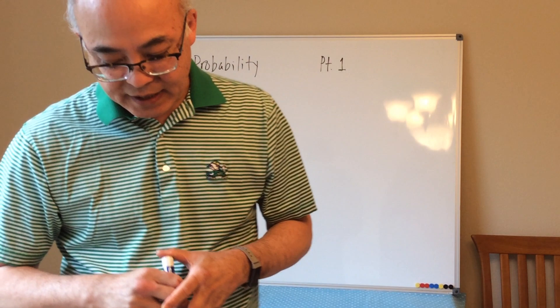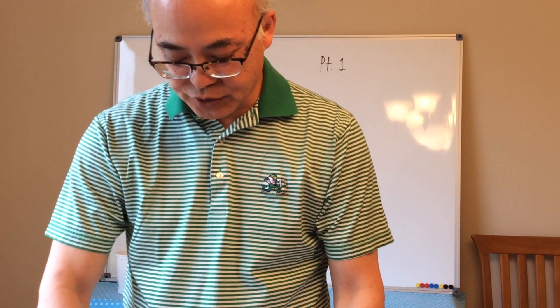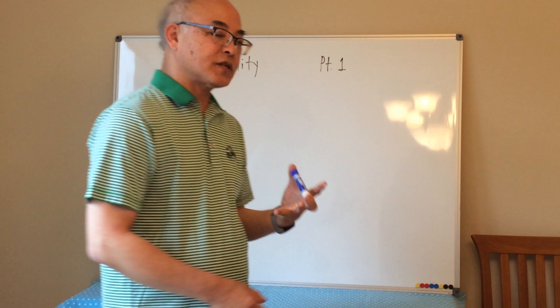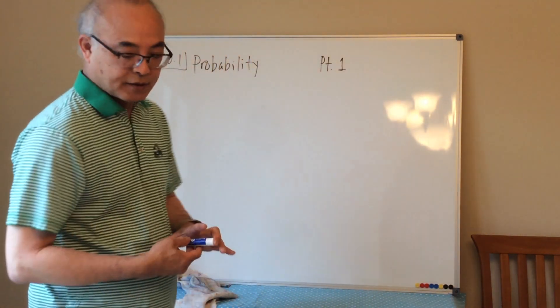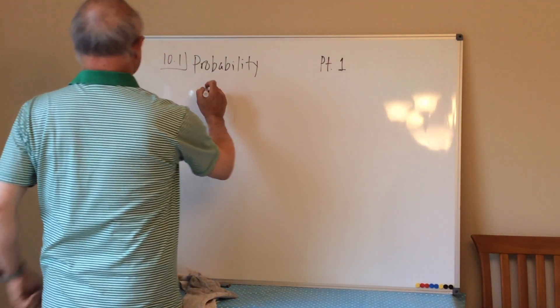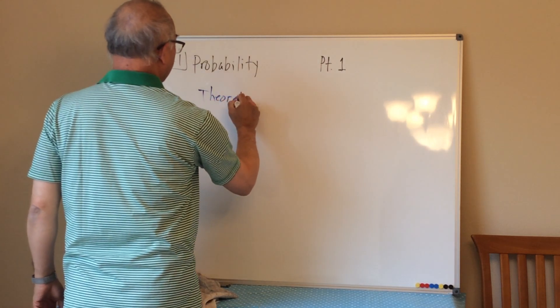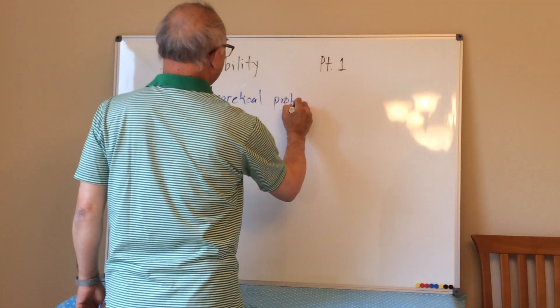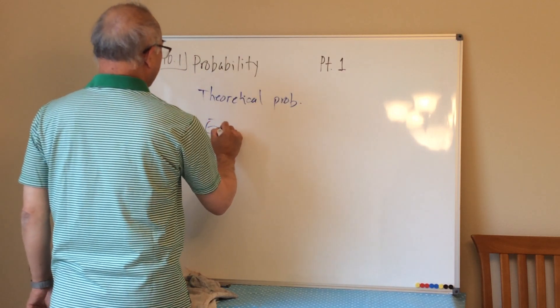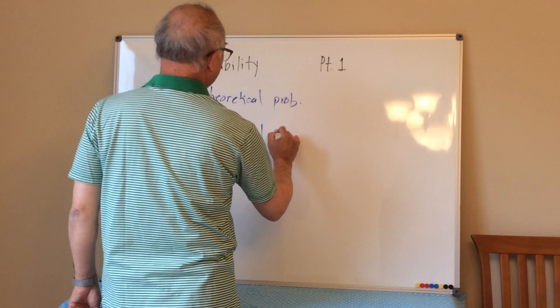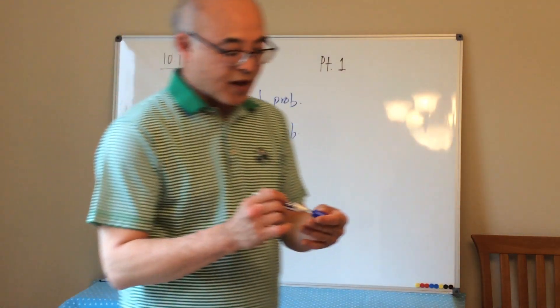We're going to start chapter 10, which is an introduction to statistics. Before we go into statistics, the first thing we're going to talk about is probability. A lot of what we'll discuss today are things you've heard before, so we'll build on that. In section 10.1, there are two types of probabilities: theoretical probability and empirical probability.